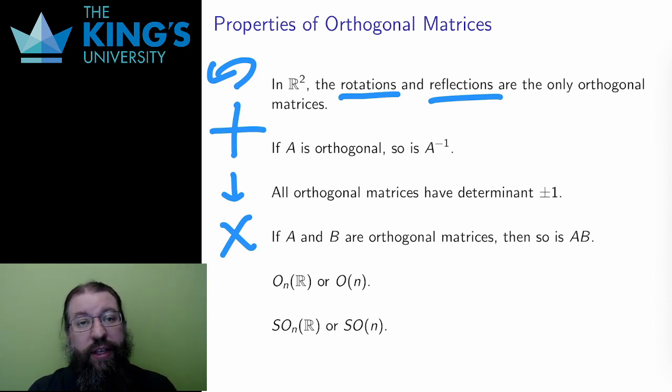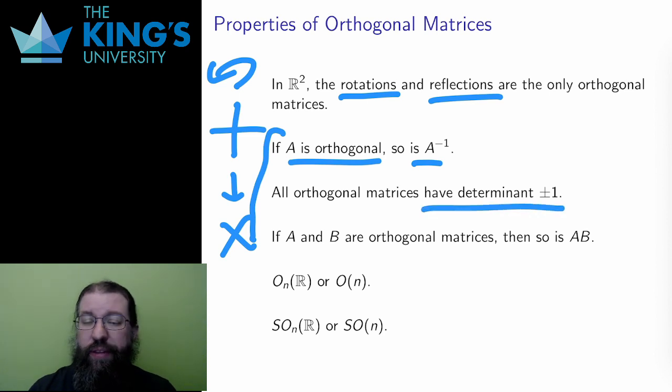Moving on from R², here are a few other properties. If A is orthogonal, so is its inverse, and this makes sense. If going forward preserves lengths, well then going backwards will do so as well. All orthogonal matrices have determinant 1 or -1. This is perhaps not surprising. By preserving lengths, areas and volumes are also preserved. It's going to be hard to change area or volume if I can't change length. However, the orientation can switch, as it does in the reflection. Be careful here. All orthogonal matrices have determinant 1 or -1, but not all matrices with determinant 1 or -1 are orthogonal. Orthogonal is quite a bit of a stronger condition here.